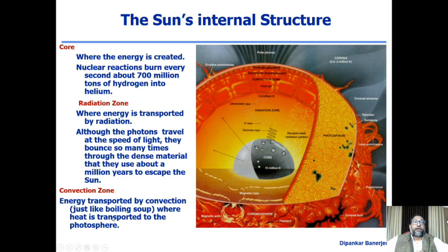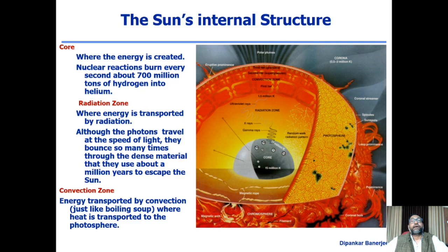Energy is then transported by convection, just like boiling soup, where heat is transported to the photosphere. The last 30% inside the sun is called the convection zone — a very important layer. It's very similar to a boiling soup: when you put soup on the heater, convection sets in, material goes up, and lighter material comes down.